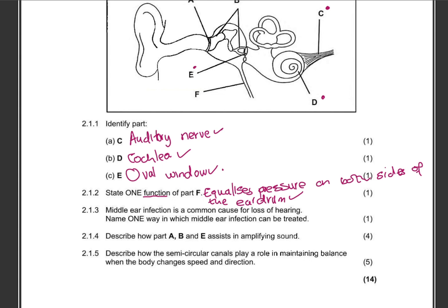Question 2.1.3: Middle ear infection is a common cause for loss of hearing. Name one way in which middle ear infection can be treated. It can be treated by using grommets, or you can mention antibiotics. Remember they asked for one, so just answer one — don't give more than one.